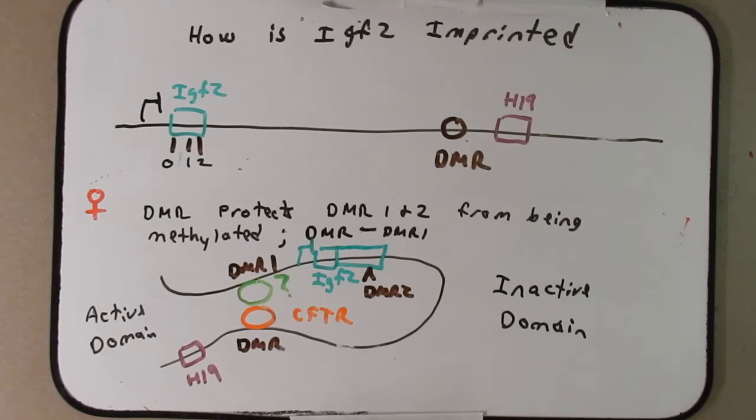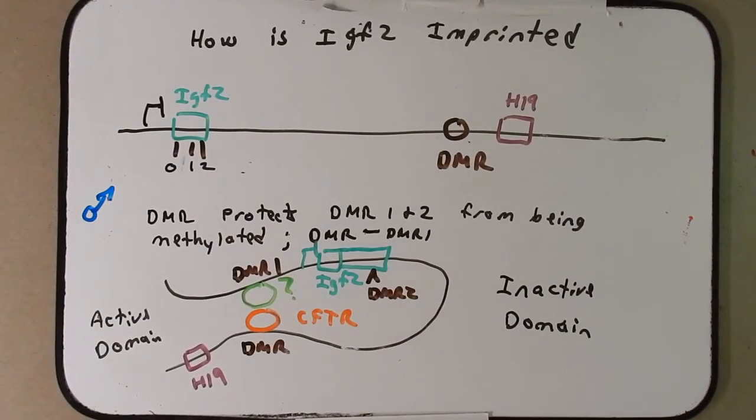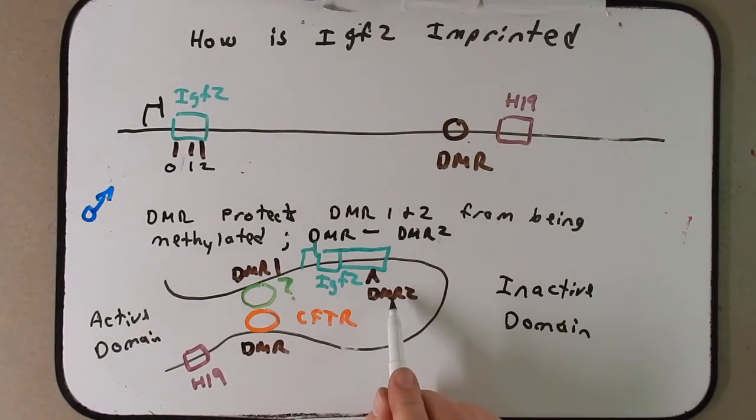Now in the paternal copy, I'm not going to erase all of this. I'm just going to adjust it just a little bit to show how just a small little tweak in the system can allow IGF2 to be expressed. So this is going to be the paternal copy. So now in this paternal copy, what's going to happen is DMR from H19 is going to interact with not DMR1, but DMR2. So what's going to happen is this is going to shift down here. The whole chromatin is going to move down a little bit so that DMR2 can now interact with DMR. Also remember, this being the paternal copy, CTCF is not going to be bound here.